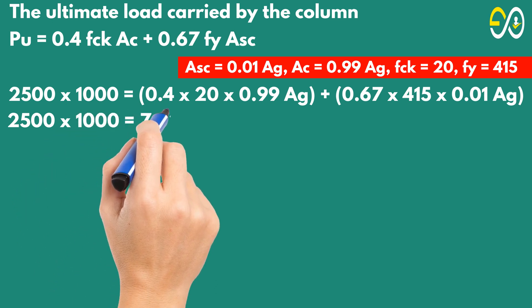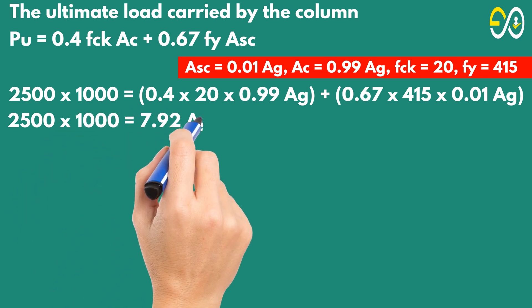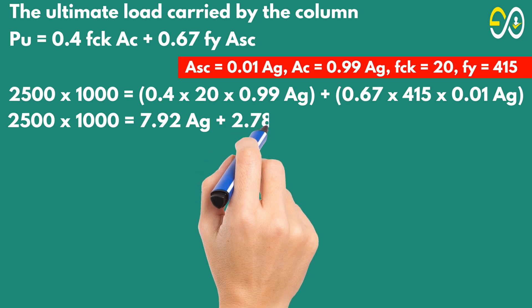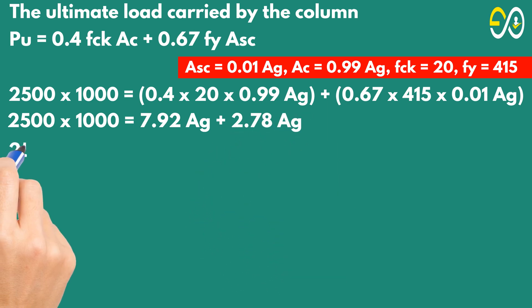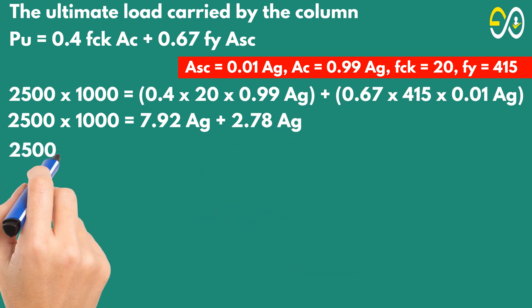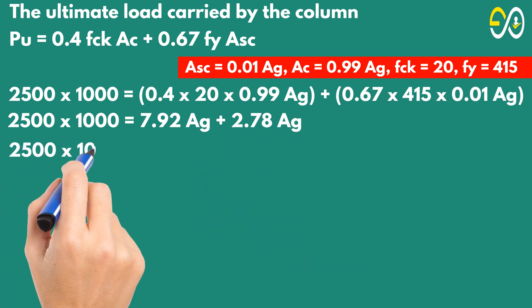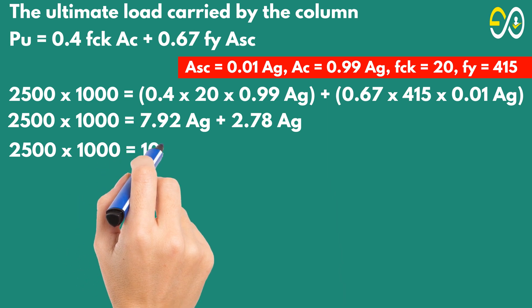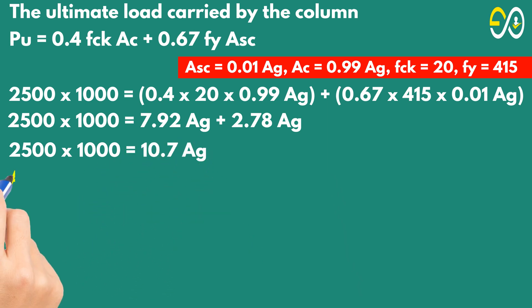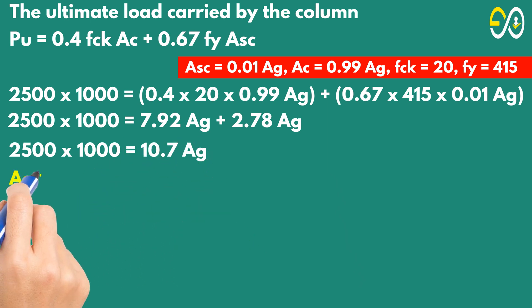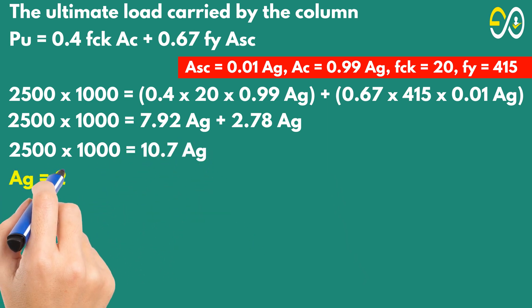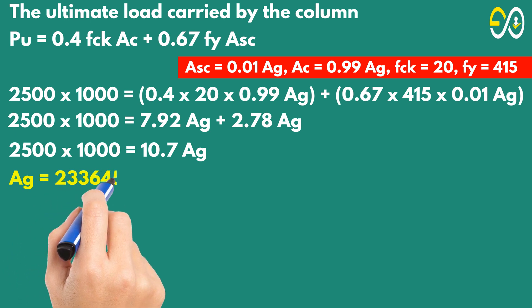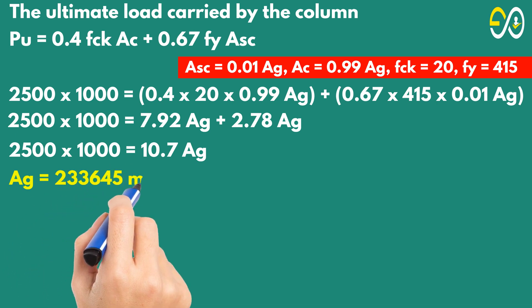Solving: 2,500,000 equals 10.7 times Ag. Therefore Ag equals 233,645 square millimeters.